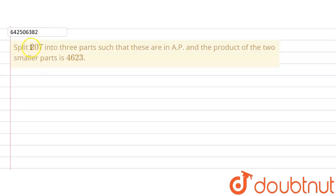The given question says that split 207 into three parts such that these are in AP. So we are supposed to split 207 in three parts such that these are in AP.